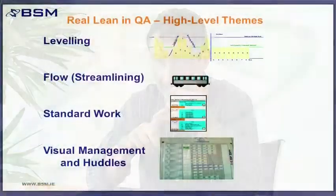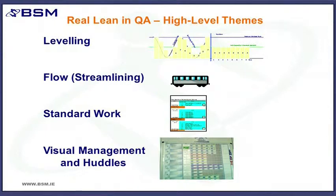If we talk strictly about real lean in QA, what are the typical high-level themes? Well, surprise surprise, leveling is always at the top of the list. We're going to talk quite a bit more about leveling as we go on. Flow is very important, standard work is very important, and probably not surprisingly, visual management and huddles are very important.